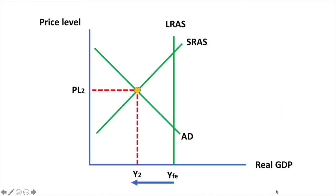Suppose this economy is in short-run equilibrium at Y2. This is below the potential of the economy at YFE. As a result, there is a negative output gap from YFE to Y2.